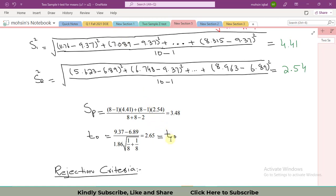I already found the test statistic t0 and the pooled standard deviation that is 3.48.